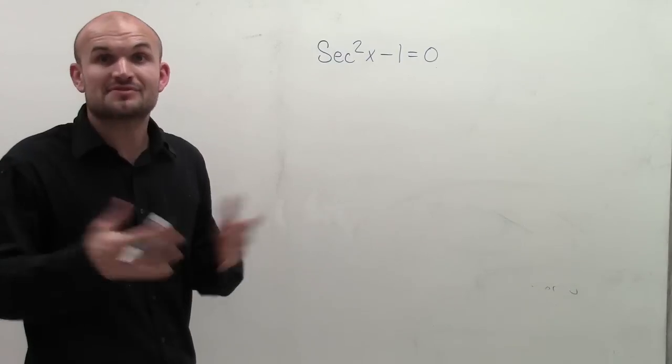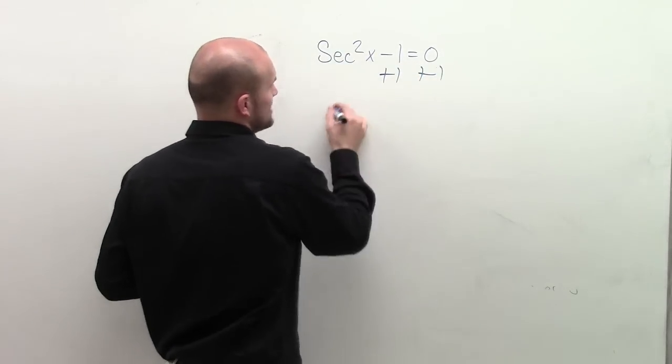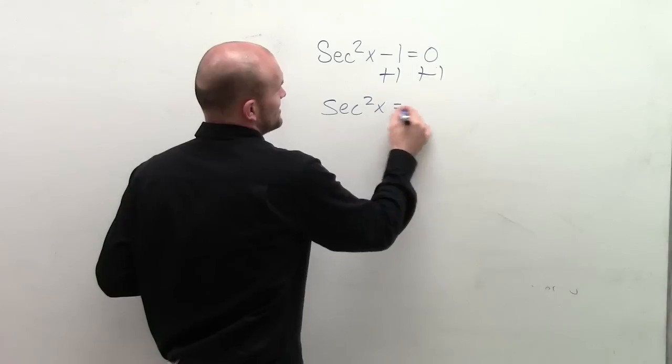To do this, the first thing we need to do is isolate our trigonometric value. So I'm going to add 1 to both sides, and I get sec²x = 1.